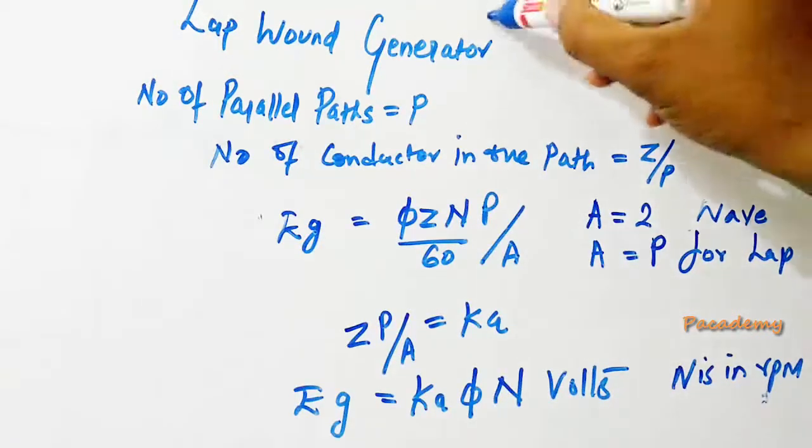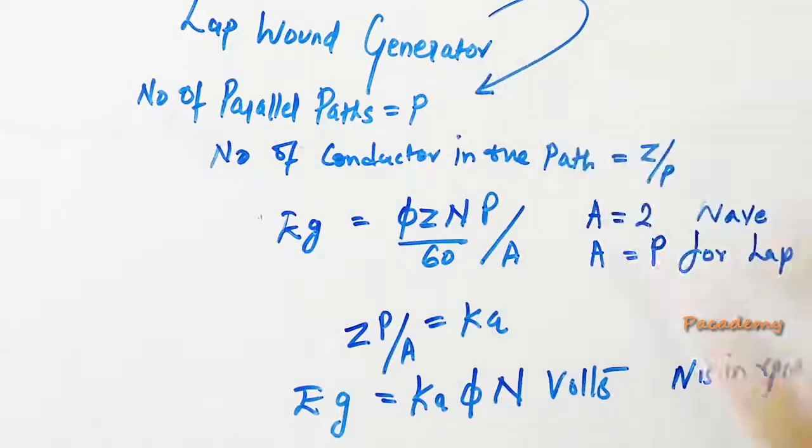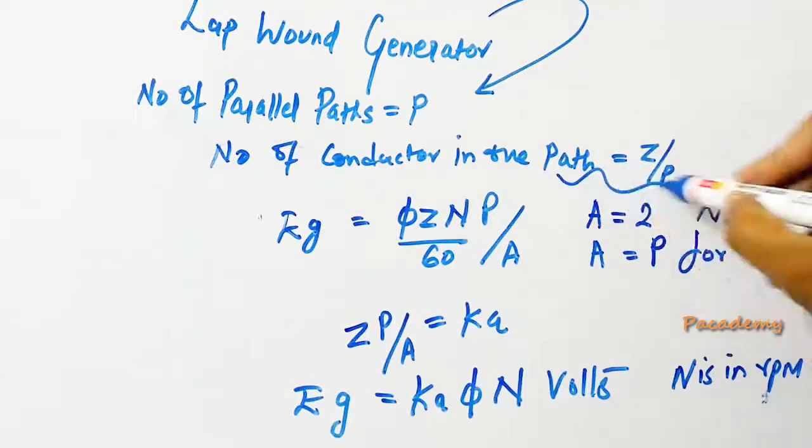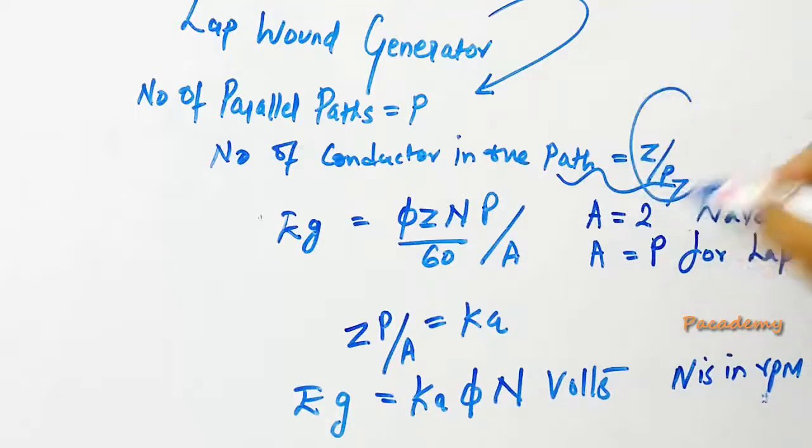For a lap wound generator, the number of parallel paths is equal to P, and the number of conductors per path will become Z by P.